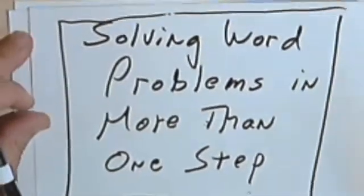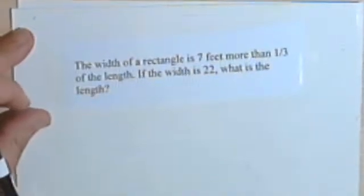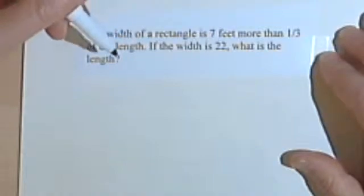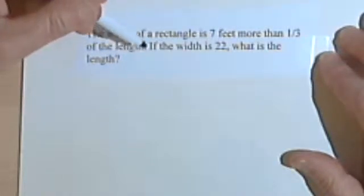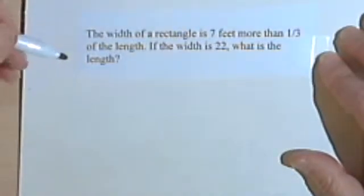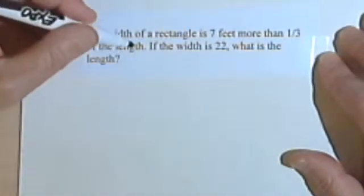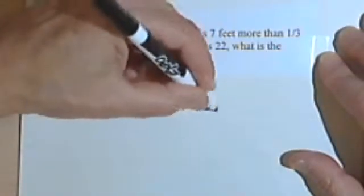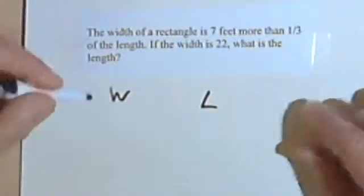Okay, so let's do one. This problem says the width of a rectangle is seven feet more than one-third of the length. If the width is 22, what is the length? So it looks like we're comparing the width and the length. Let me start out with a W and an L so I can compare the width and the length.